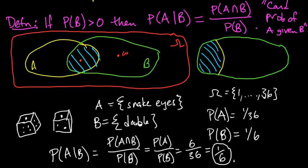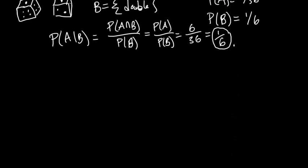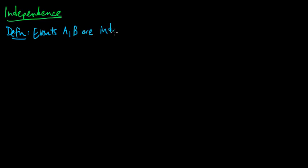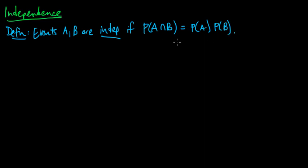We just saw an example of conditional probability, and now we're ready for independence. Independence is a fantastically useful property to have — whenever you've got independence, life is good. I'm going to give you three definitions. They're not equivalent definitions, but they are definitions of independence in different types of contexts. The first definition is independence between two events. We say that events A and B are independent if the probability of their intersection equals the product of the probabilities. That's independence for two events.